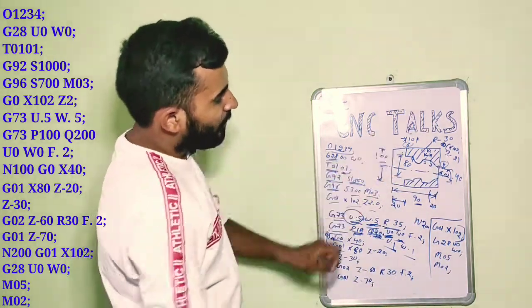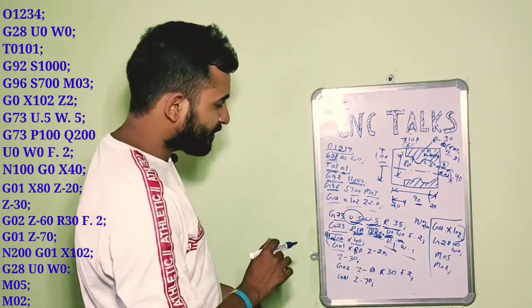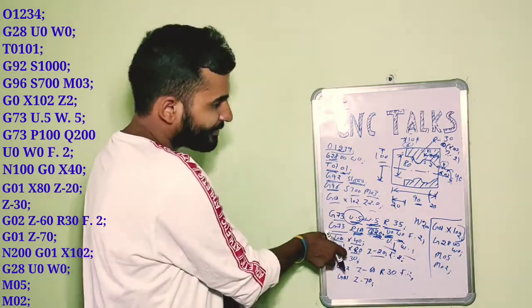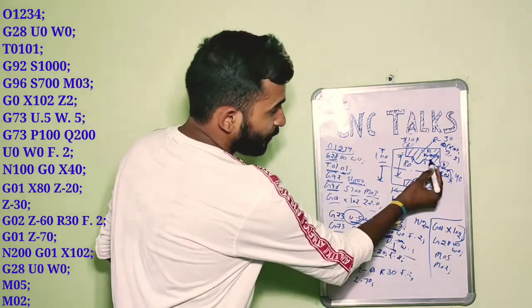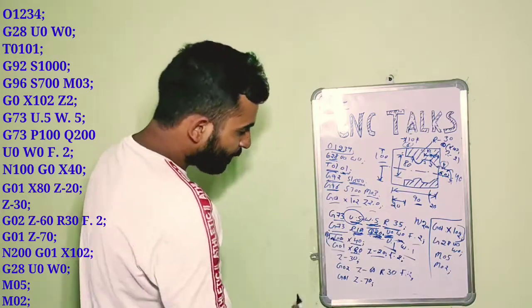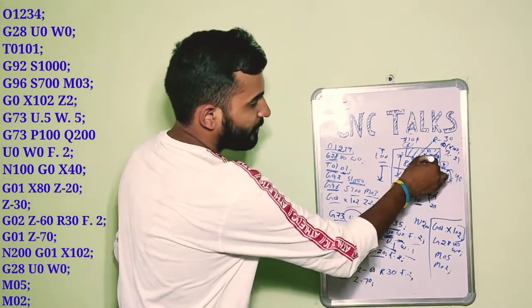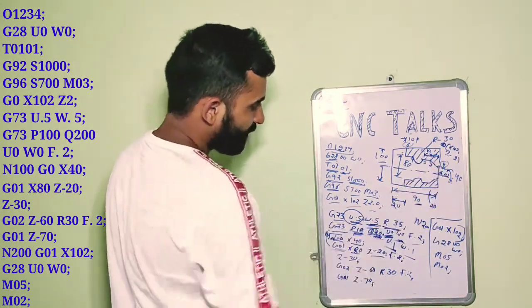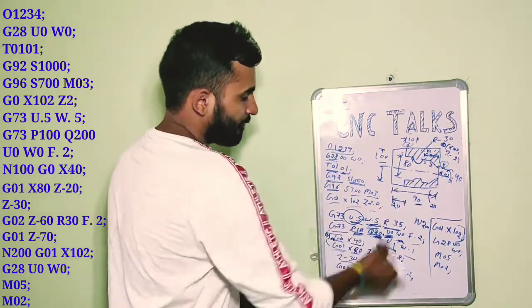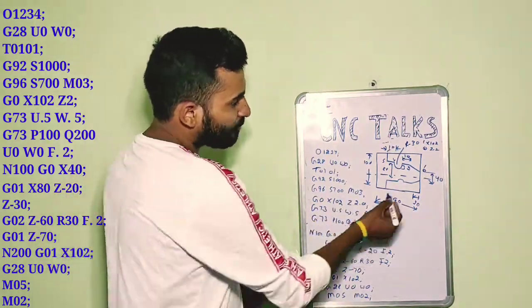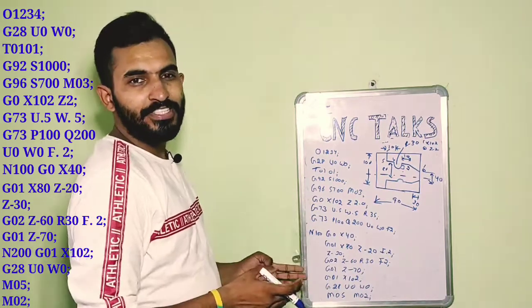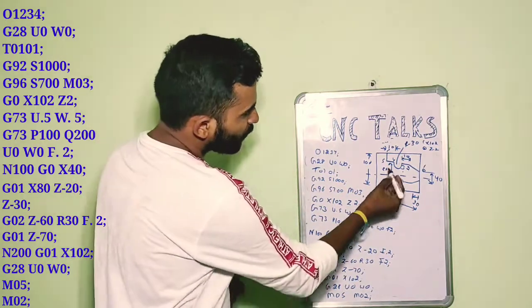At point 2, the value of X is 80 and Z is 20mm. So I use G01 X80 Z20 with a feed rate of 0.2 — our tool moves from point 1 to point 2. From point 2 to point 3, we use G01 with a feed of 0.1. The distance to point 3 along Z-axis is 20 plus 10 which is 30, so we give Z minus 30 and our tool moves from point 2 to point 3. Now our tool is at point 3 and we need to move from point 3 to point 4 in clockwise direction.